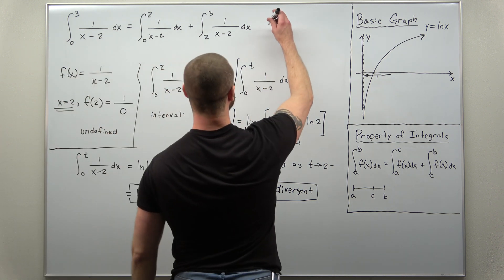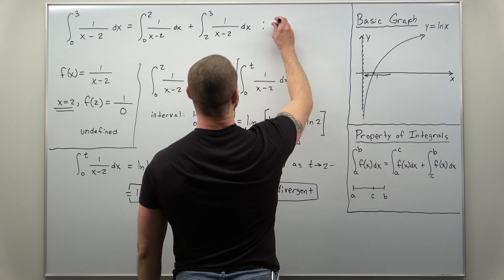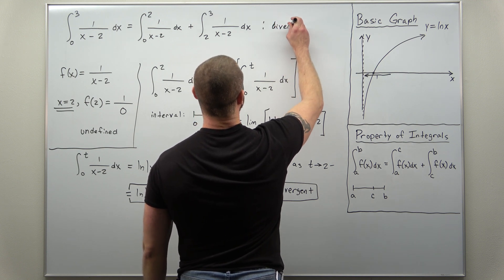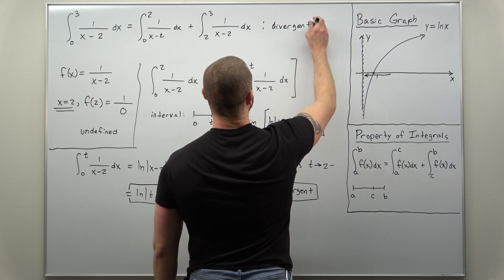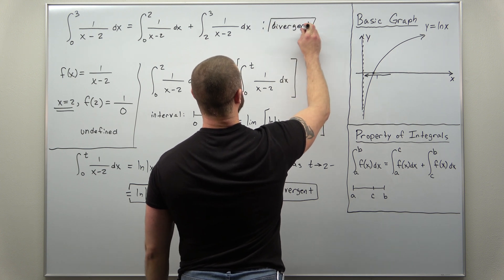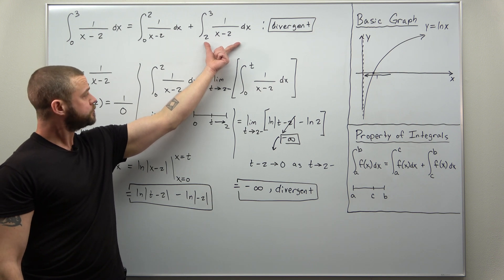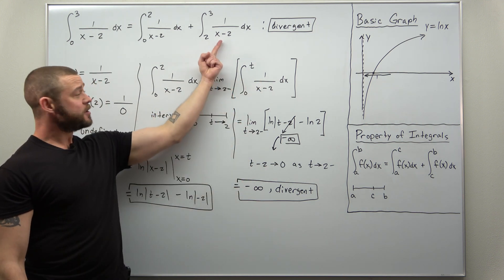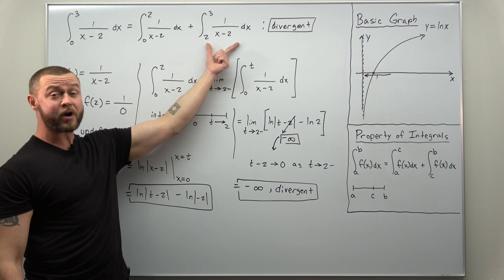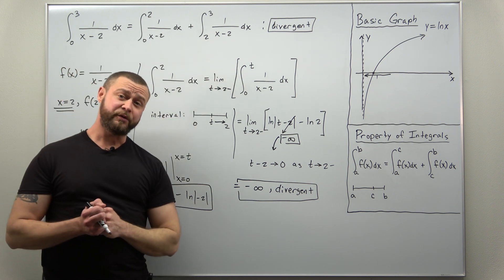So what we find here, we have a divergent improper integral. If you were to go through the work for the other part here, it's very similar and you'll also find that the second improper integral here is also divergent.